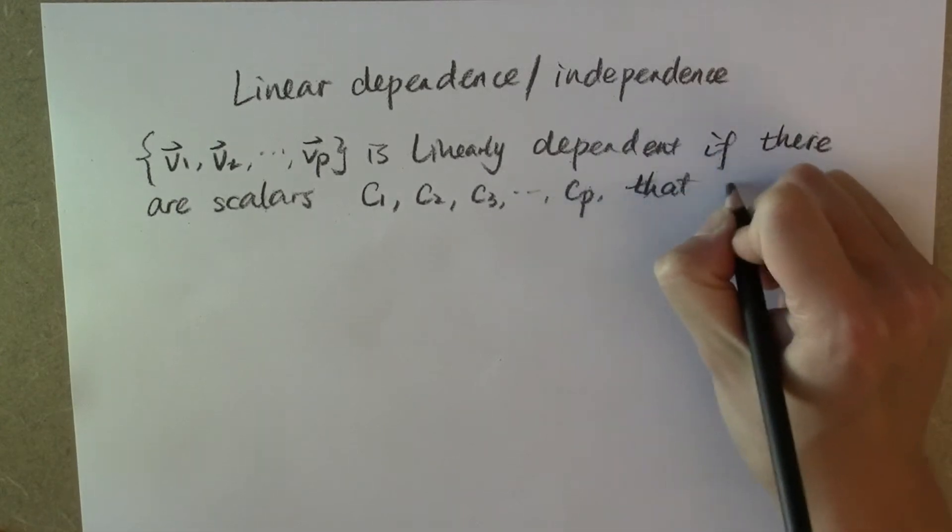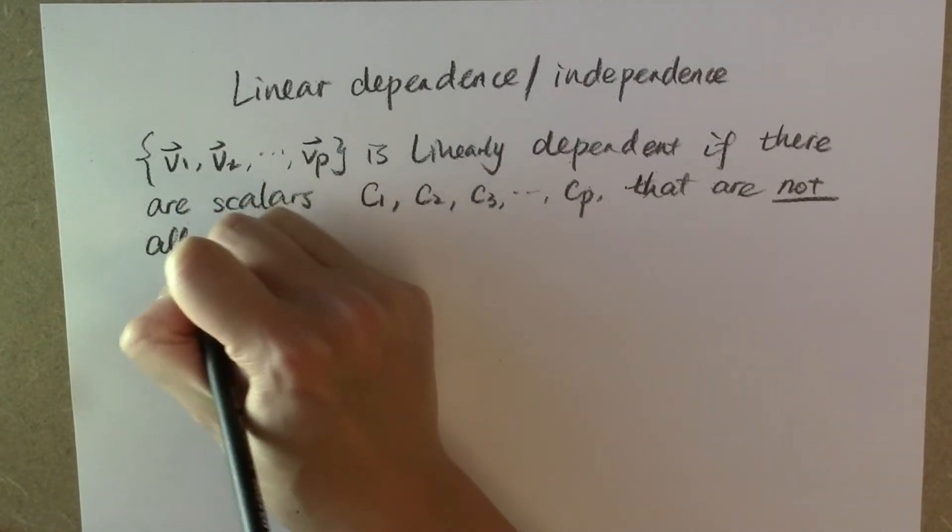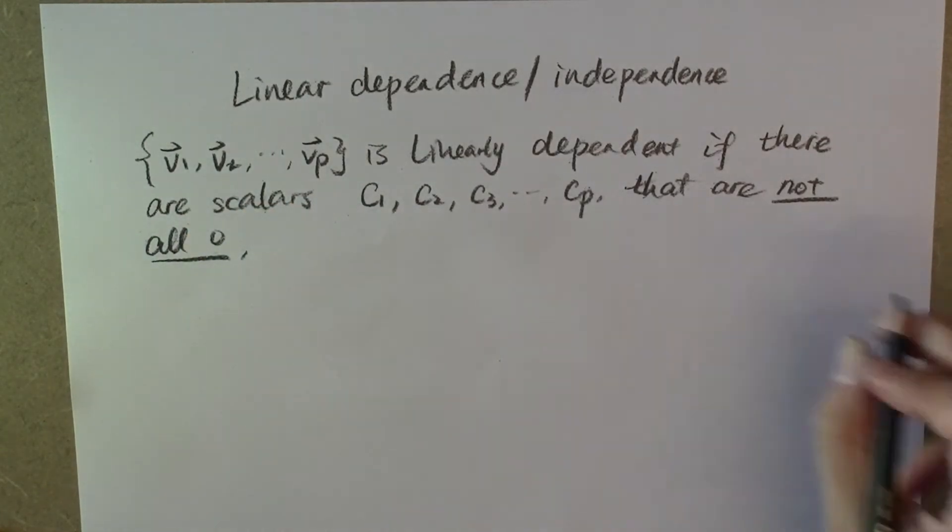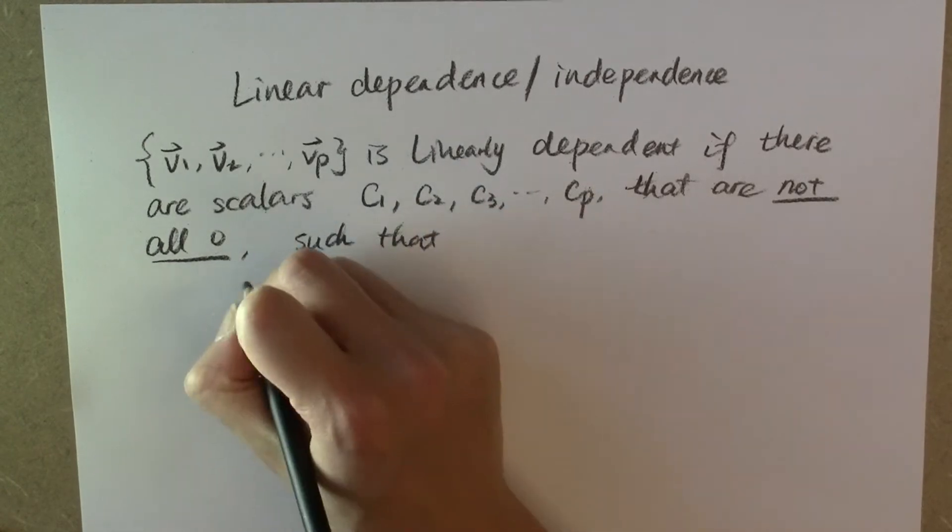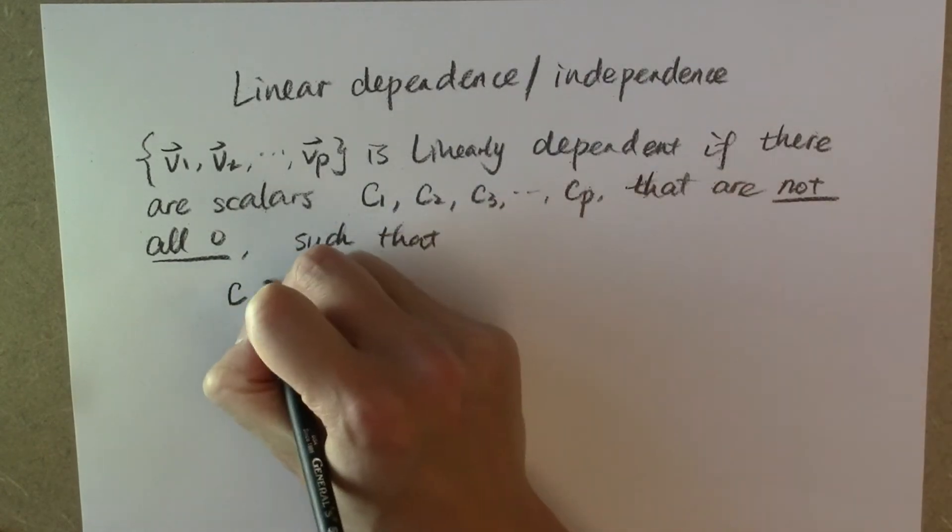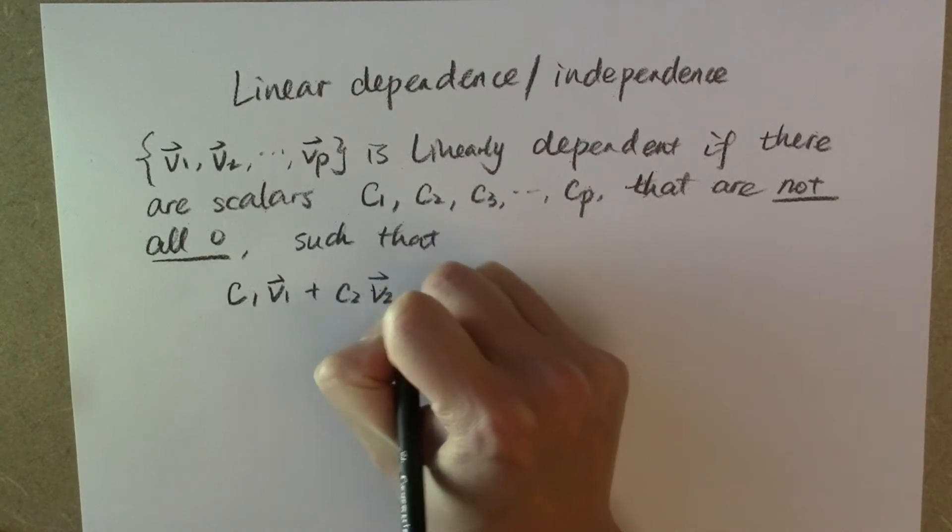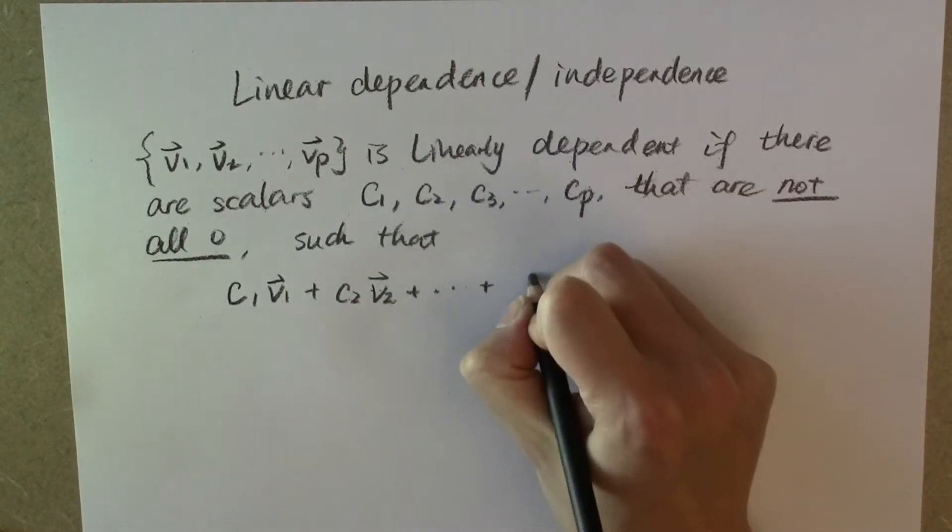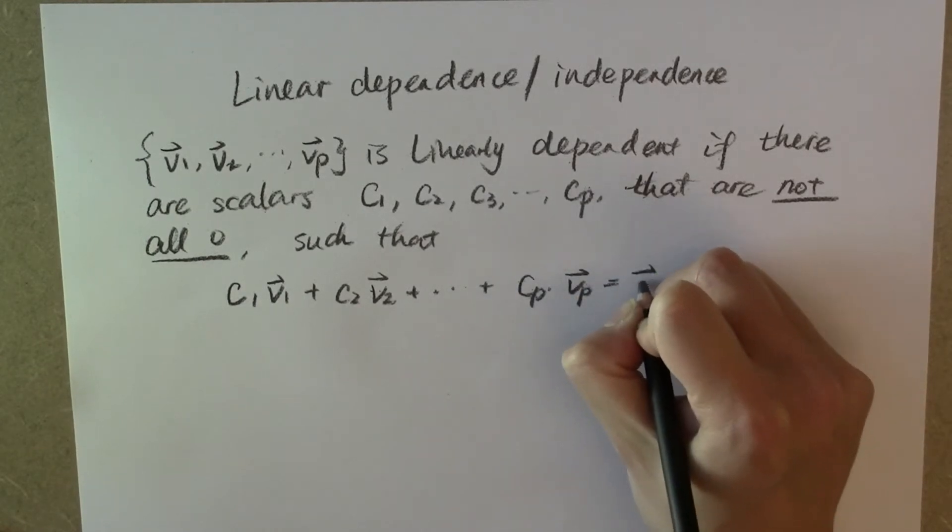that are not all zero—which means at least one of them is not zero—such that c₁v₁ + c₂v₂ + ... + cₚvₚ equals the zero vector.